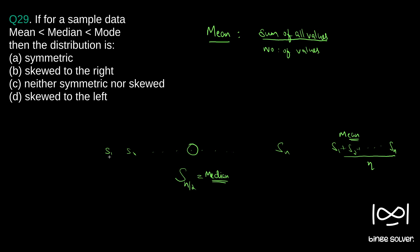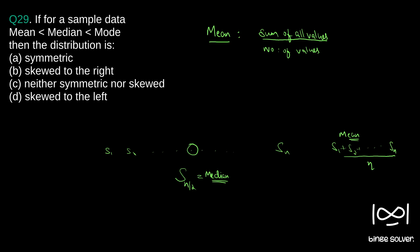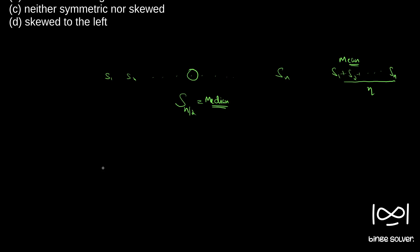To find the median, we first have to order the numbers and pick the middle number. Mode is the most frequent number that appears in the list of numbers.